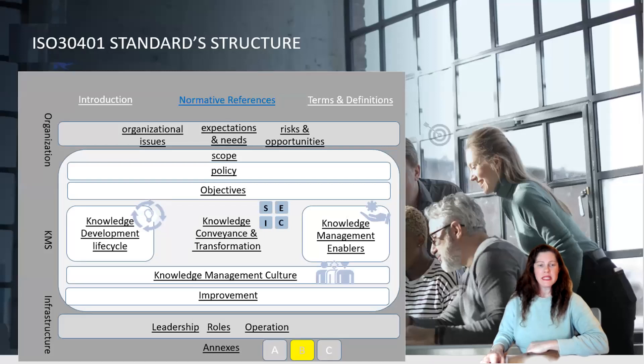The following is the ISO 30401 standard structure. Today, we'll be talking about Annex B.